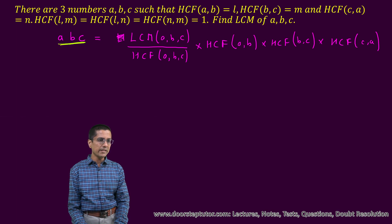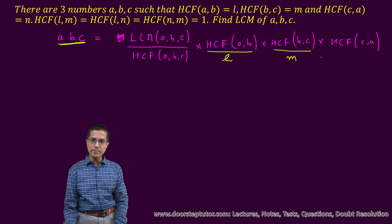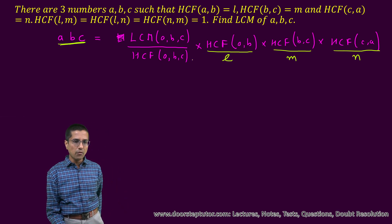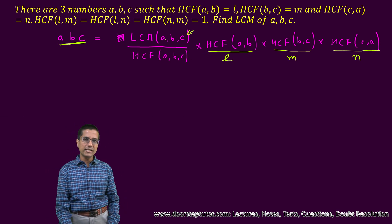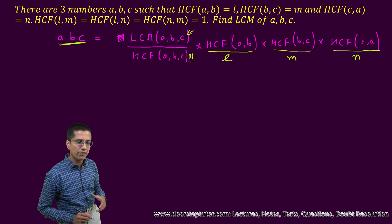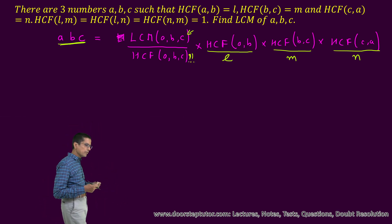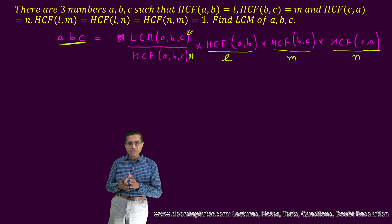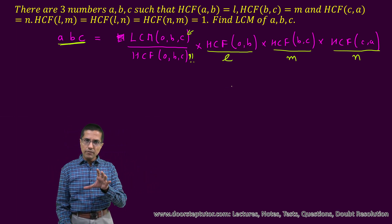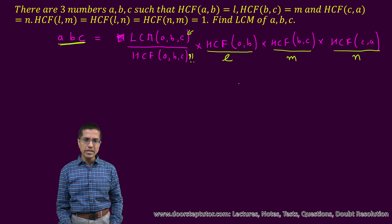We have been given the numbers already. We have been told that this is equal to L, this is equal to M, and this is equal to N. We have been asked to find the LCM of the three numbers — LCM of ABC — and this is actually missing; we do not know the SCF of ABC.